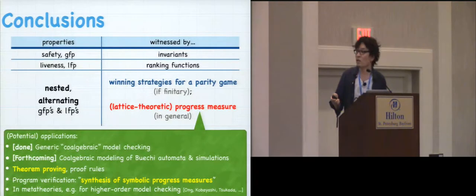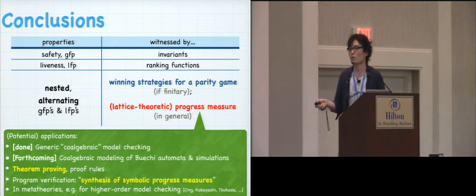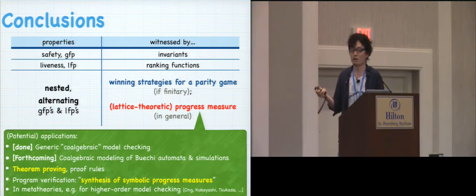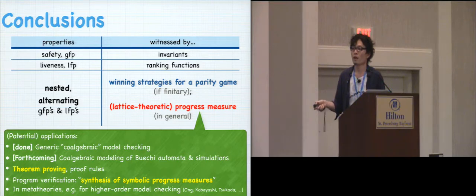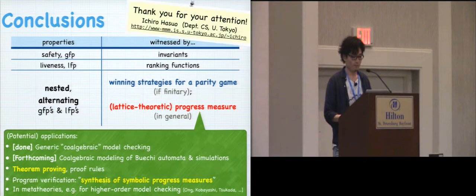Okay, so I think more or less it. So this is the conclusion. This is what we did. So, for safety invariance, for liveness, ranking functions, this is all as usual. But for nested alternating fixed points, we generalized this winning strategies or progress measures, the algorithmic notion by Jurdzinski to the lattice theoretic notion. And here are the potential applications of this general notion, and also, it translates to a large part of our future work. Thanks a lot.